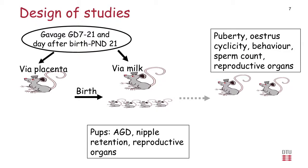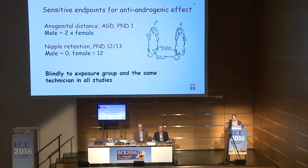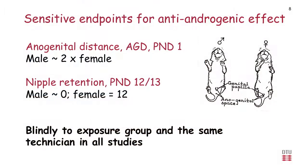Our study design has been consistent throughout: we give substances or the mixture to time-mated animals during pregnancy and lactation, look at a number of endpoints in the pups, and keep some pups for follow-up at later time points. Key endpoints we have used extensively are anogenital distance and nipple retention, because they are quite sensitive endpoints for anti-androgenic effects.